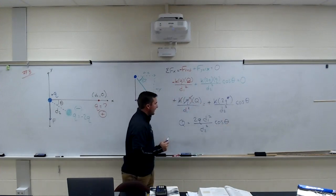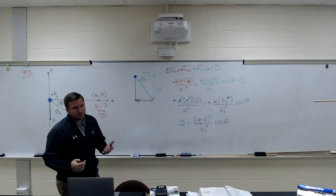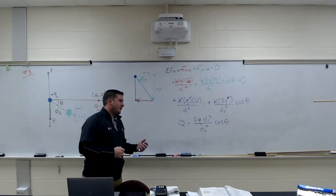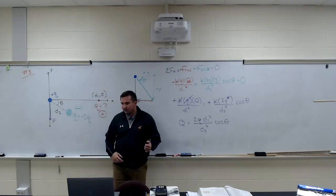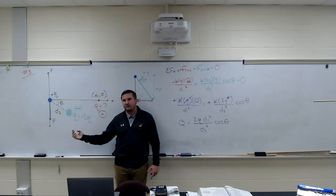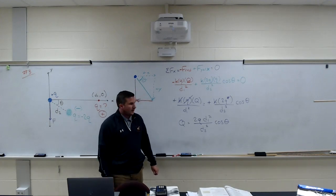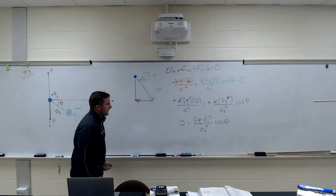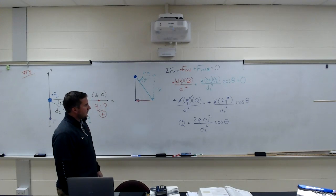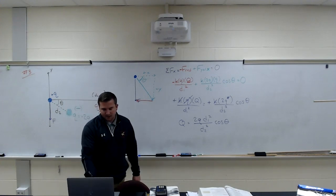And there's our answer in terms of Q, d1, d2, and theta. That answer will vary based on where the yellow particle actually is in space — the farther it is away, the weaker that charge can be. So there is our answer in terms of Q, d1, d2, and theta.